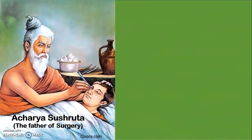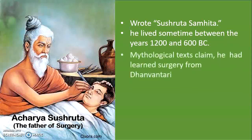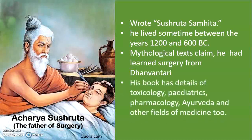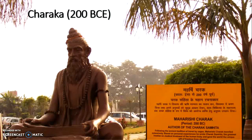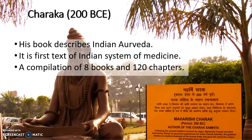Another very famous contributor in ancient Indian science is Acharya Sushruta, whom we call the father of surgery with great respect. He wrote the Sushruta Samhita. He lived between 1200 to 600 BC — the exact year is not known — and mythological texts claim he learned surgery from Dhanvantari. His book has detailed descriptions of toxicology, pediatrics, pharmacology, Ayurveda, and other fields of medicine. Along with Sushruta, we recall Maharshi Charak, who was around 200 BCE. His book Charak Samhita talks about Indian Ayurveda, known as the first text of the Indian system of medicine, and is a compilation of eight books and around 120 chapters.